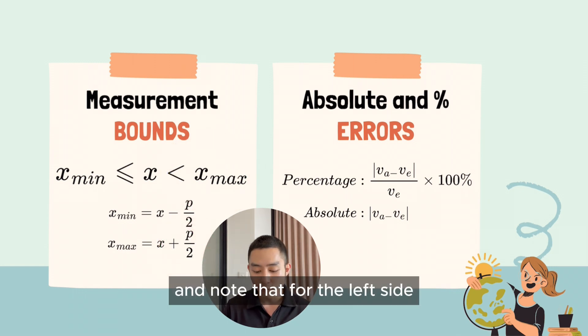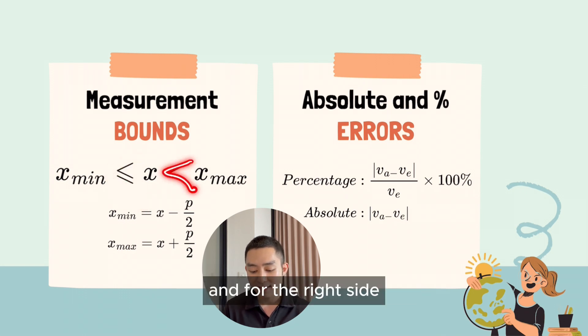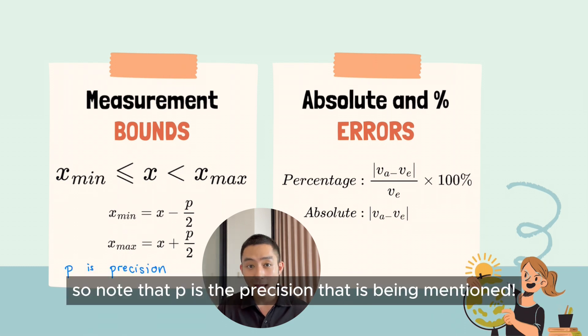And note that for the left side we give equality, and for the right side it's just inequality. So note that p is the precision that is being mentioned.